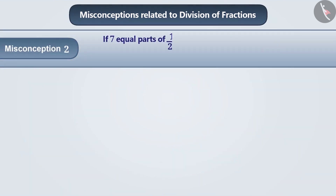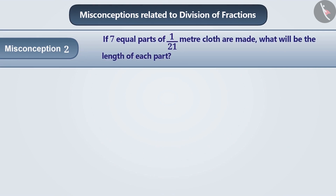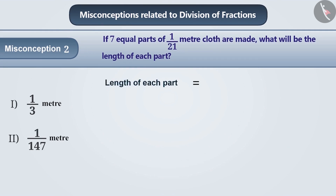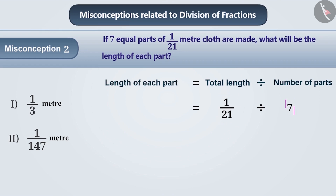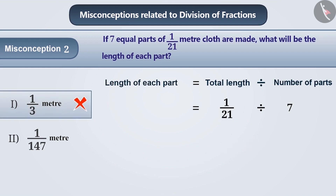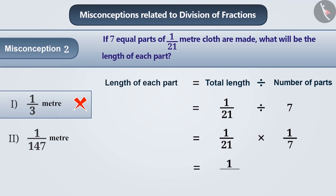Misconception 2: If seven equal parts of one by twenty-one meter cloth are made, what will be the length of each part? To find the length, the total length has to be divided by the number of parts, that is one by twenty-one has to be divided by seven. While dividing a fraction by a whole number, children often tend to divide the denominator. Here the result obtained while dividing one by twenty-one by seven is one by three — this is wrong. The correct approach is to keep the first number exactly the same and multiply it by the reciprocal of the second number. So one by twenty-one divided by seven equals one by twenty-one into one by seven, which is equal to one by one hundred forty-seven.